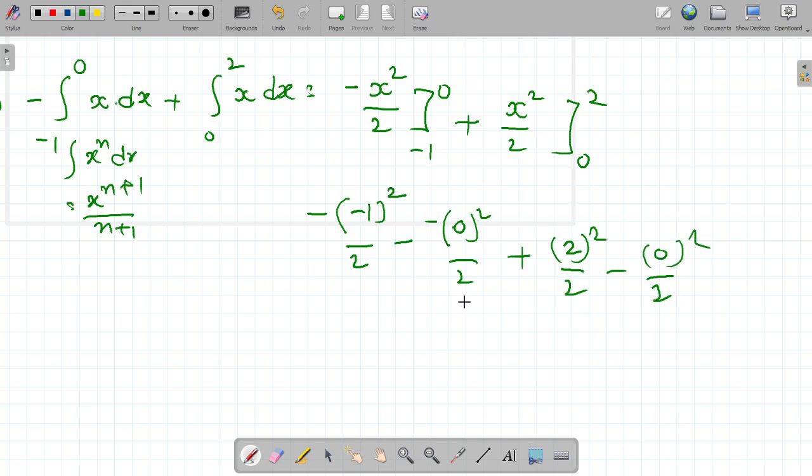Here minus is there, don't forget. So minus 1 whole squared is 1 minus 1 by 2. 2 whole squared, 2 minus 0, equals 2.